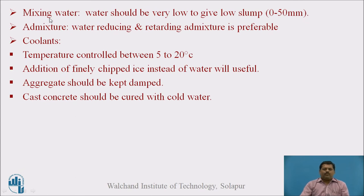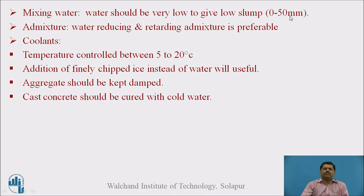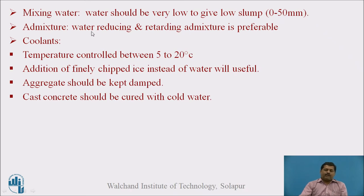Regarding mixing water, the quantity of mixing water must be very low so that it can give only 0 to 50 mm slump. Even 0 slump is admissible. For admixtures, a water-reducing type of admixture and a retarding admixture are preferred, meaning the setting time is delayed so that the heat of hydration will not be very fast at early age.